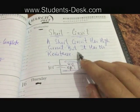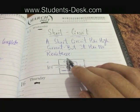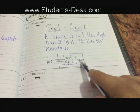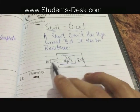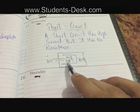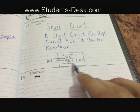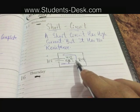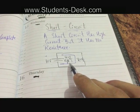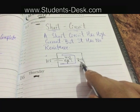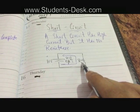Now let's discuss a short circuit. A short circuit has high current but no resistance. Let's take a look at this example: the resistance is zero but the voltage is 10 volts, so because there is no resistance, the current is very high in a short circuit.